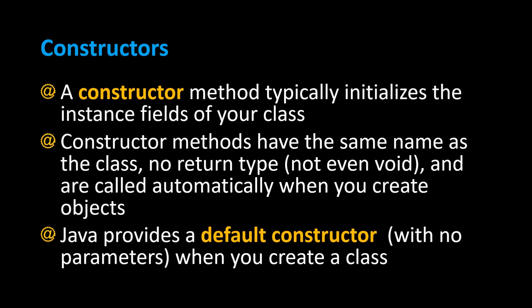A constructor method typically initializes the instance fields of your class. Constructor methods have the same name as the class, they don't have a return type — not even void — and they're called automatically when you create objects. Java provides a default constructor for you with no parameters when a class is created.